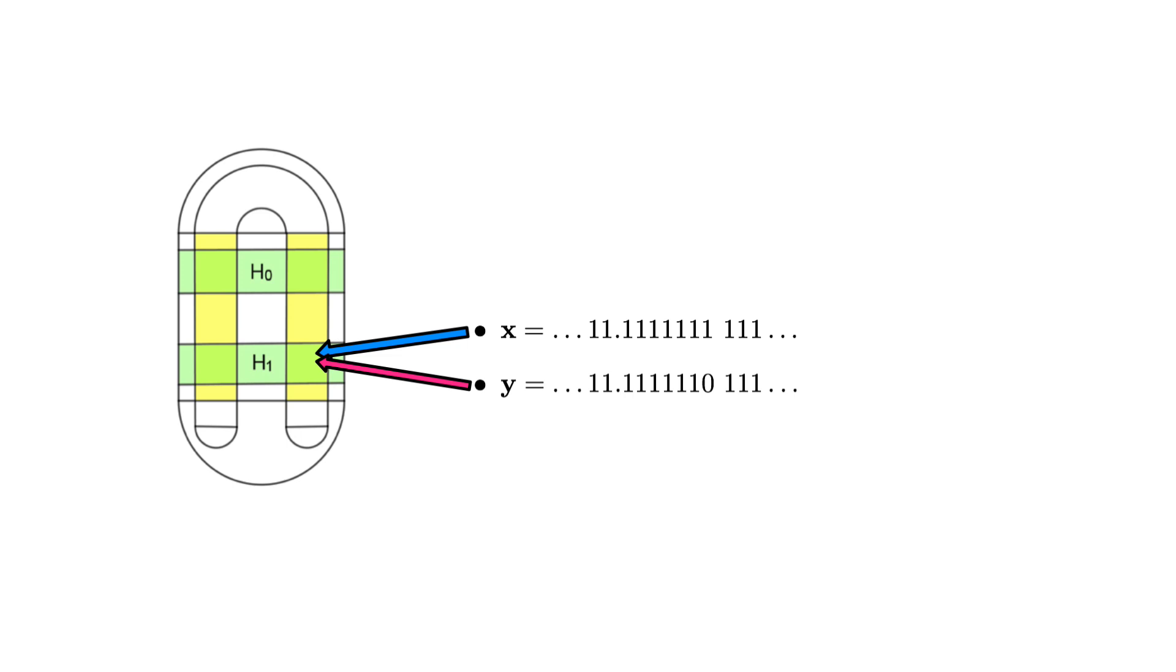However, on the sixth iteration of the map, f to the sixth of y is equal to this sequence, while f to the sixth of x is equal to this sequence. The two sequences differ by the most immediate value next to the decimal. In other words, f to the sixth of y is in h0, while f to the sixth of x is in h1. The two images are far apart, despite the fact that x and y were initially extremely close.